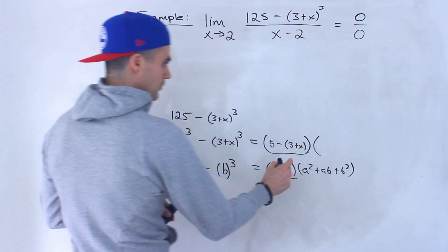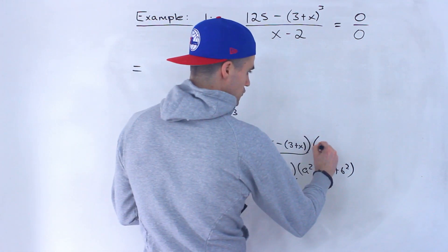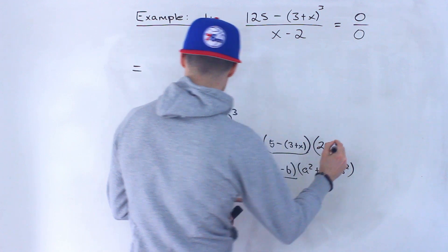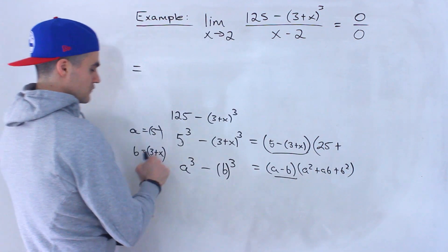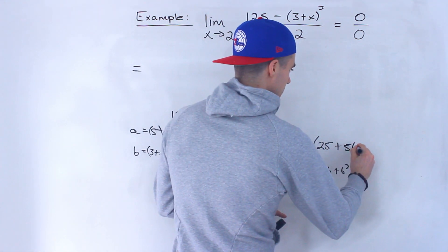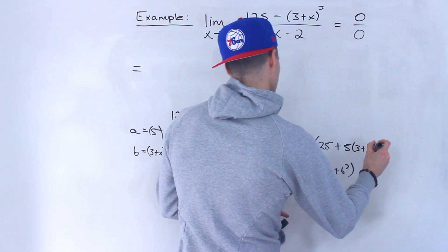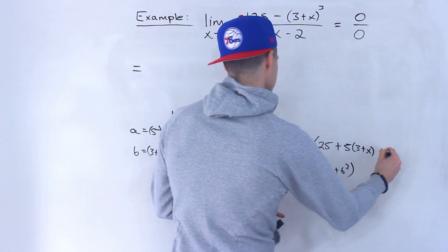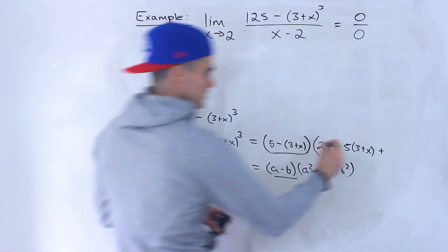And then what we would do is we would take a squared, which would be 5 squared, which would be 25, plus a times b, so 5 times (3 plus x), plus b squared, which would be (3 plus x) squared.